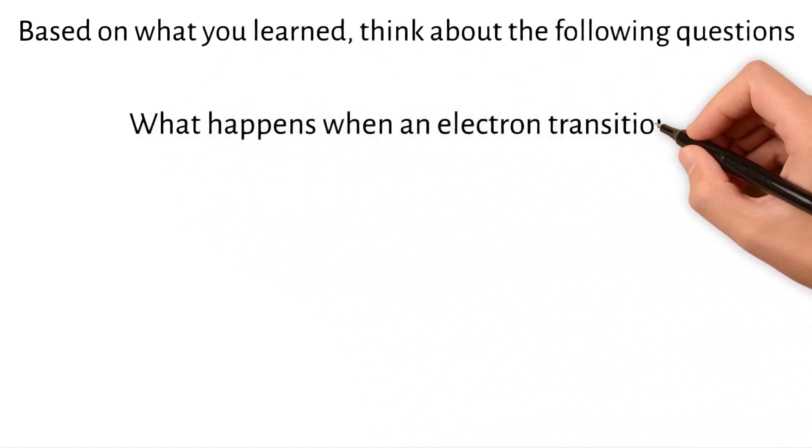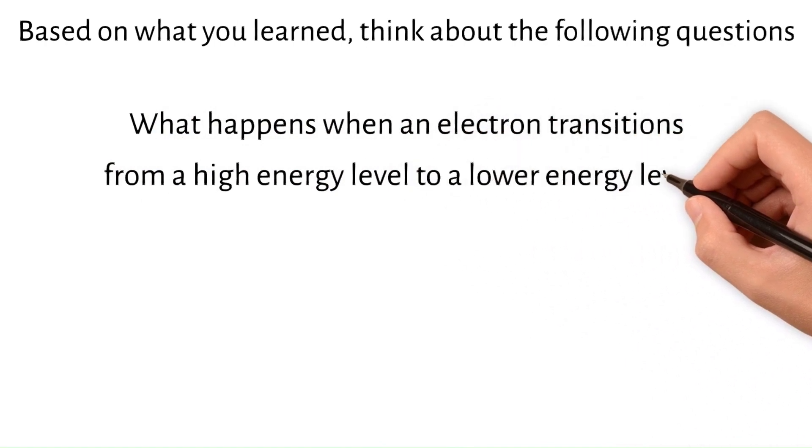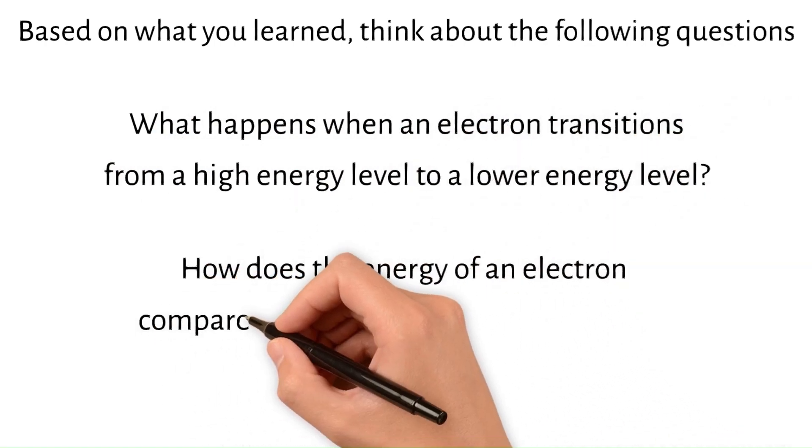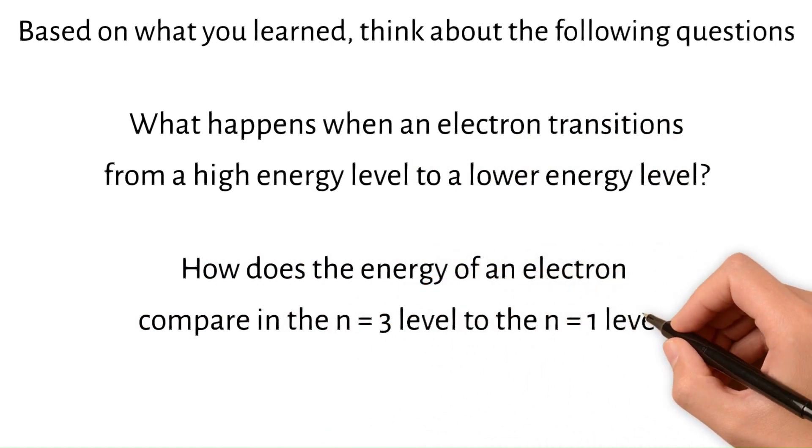What happens when an electron transitions from a high energy level to a lower energy level? How does the energy of an electron compare in the n equals 3 level to the n equals 1 level?